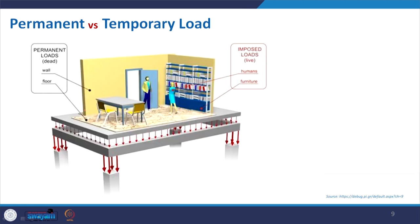Here is a schematic image where the wall transfers load to the floor, the floor transfers load to the beam, the beam transfers to the column, and finally it transfers to the foundation, which transfers load to the soil it is anchored in. These are permanent load or dead load. The imposed load is the human being and the furniture.